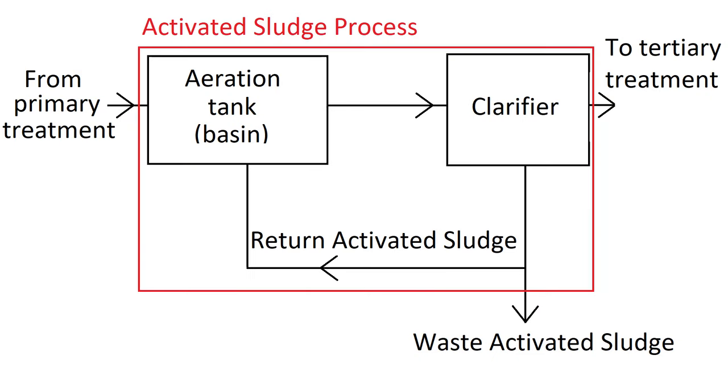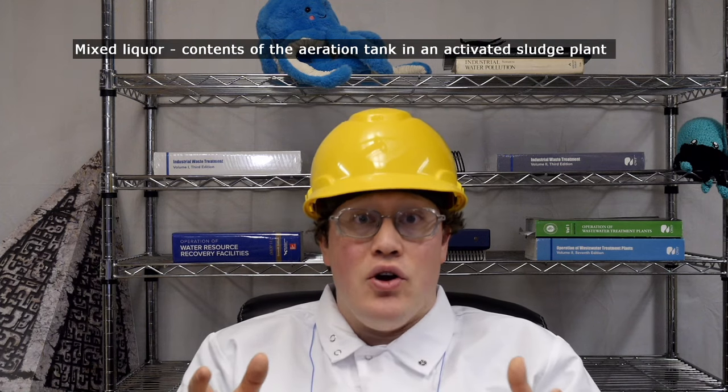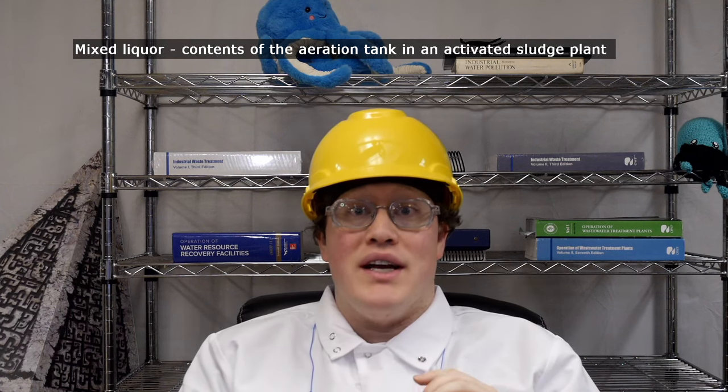This part of the diagram is where the activated sludge process is actually happening. The physical requirements are pretty simple — you need a tank to contain all the wastewater and microbes. The industry term for the contents of this tank is 'mixed liquor,' although this definitely is not the kind of liquor you would want to drink. It turns out the microbes that do the best job of breaking down pollutants are bacteria operating under aerobic conditions — in other words, using oxygen to live and grow. So this tank needs some way of adding oxygen to the mixed liquor to support these bacteria.